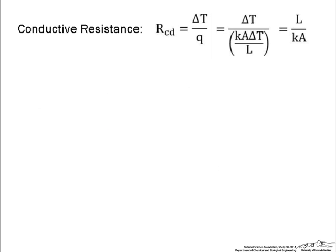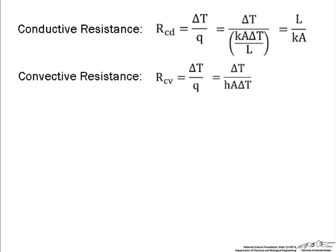Now let's look at our convective resistance. Here, we use delta T over q for our convective resistance, which is delta T, and now convection is h, our heat transfer coefficient, times this area, as shown before, times delta T. So our convective resistance is 1 over h times A.